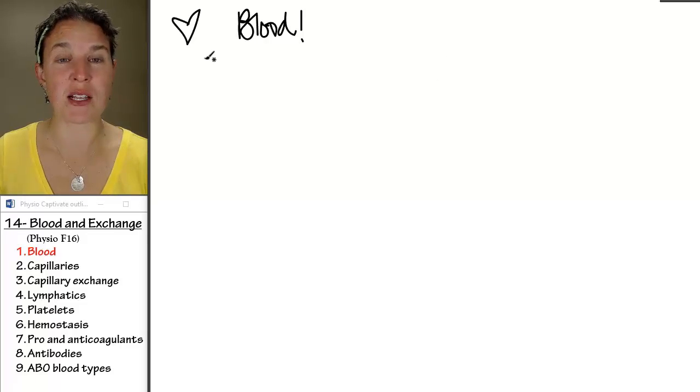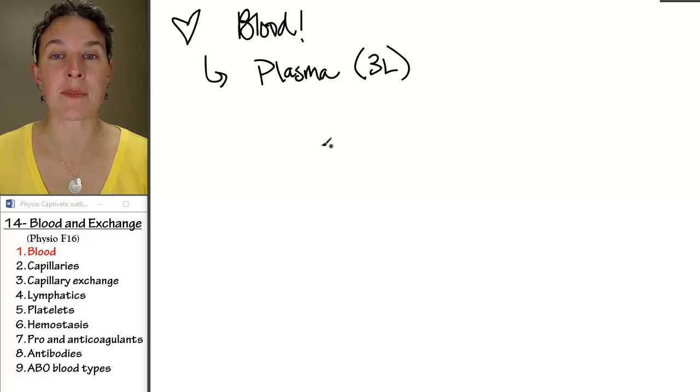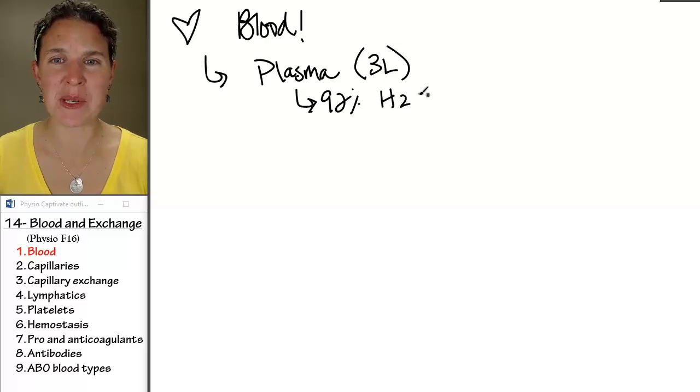Let's remind ourselves of what blood is made out of. You can push pause and go through this process because you already know this stuff. 92%, three liters of your blood is plasma, and 92% of that is water. So plasma is basically just the fluid that your blood cells float in.